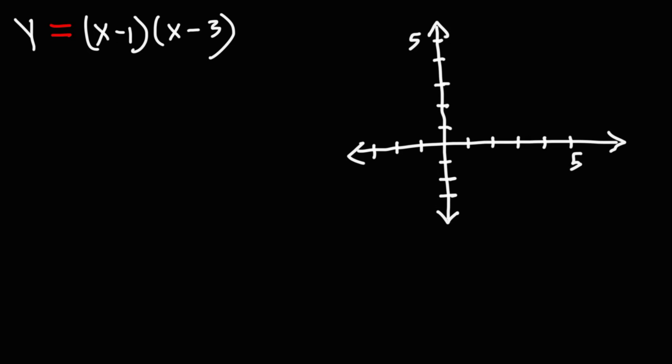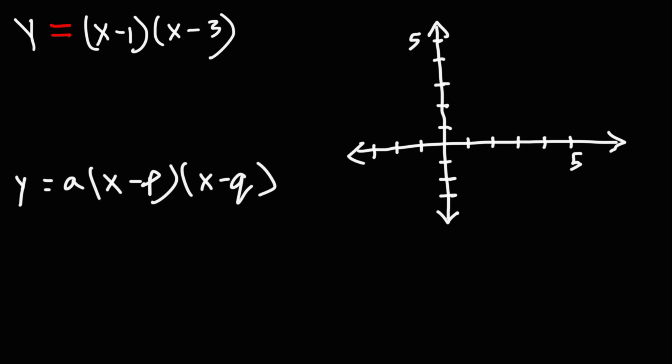In today's lesson, we're going to focus on graphing a quadratic function when it's given in intercept form. Here's a standard equation of a quadratic function in intercept form: y is equal to a times x minus p times x minus q.